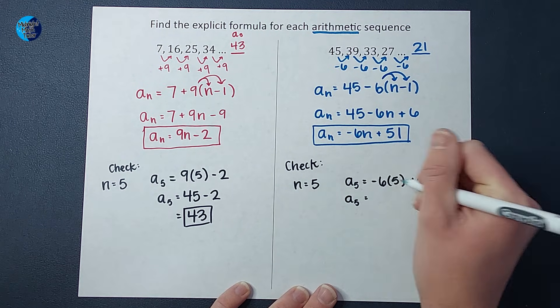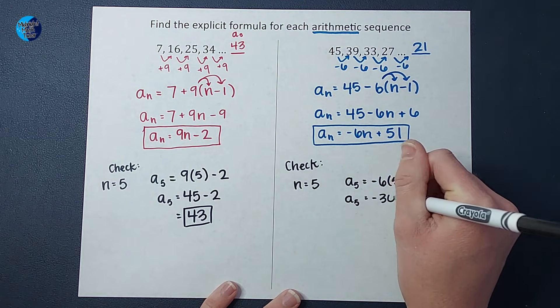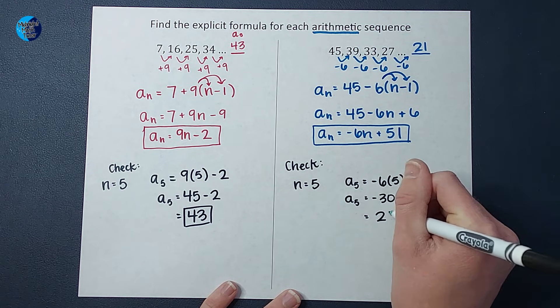A sub 5 equals negative six times 5 is going to give me negative 30 plus 51. And guess what that is equal to, guys? 21. Yes.